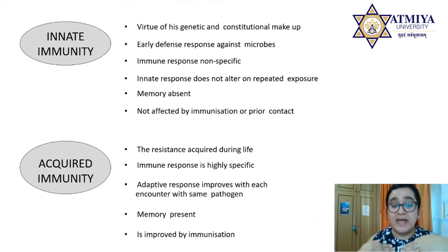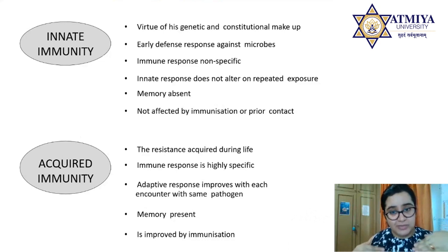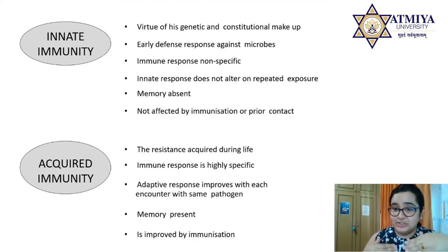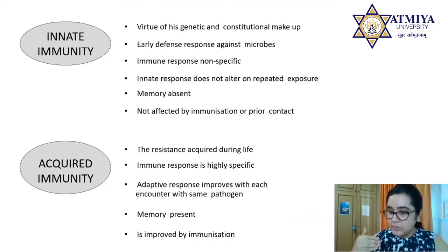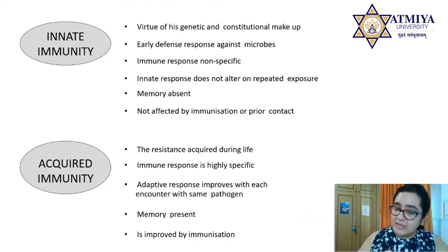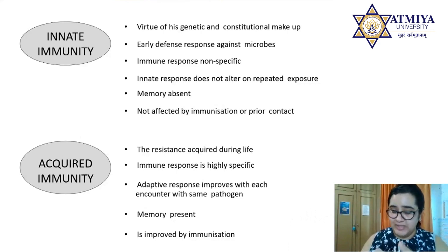Acquired immunity is highly specific and sophisticated, while innate immunity is non-specific. Initially, our body doesn't know what threat it's dealing with, so the response is non-specific. Innate response does not change on repeated exposure. But acquired immunity learns — it has a memory function, remembering prior viral exposure to mount a better response. This can be improved by immunization, the development of vaccines, while innate immunity is not affected by immunization or prior contact with a pathogen.